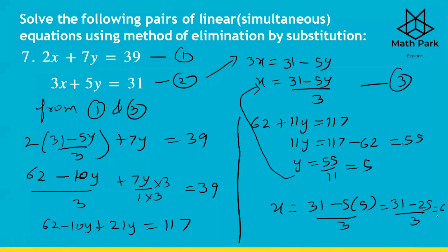So x = 2 and y = 5 is the required solution for our simultaneous equations. We have done 7 questions; the next 7 questions will be solved in the next video. If you like the video, please share with your friends. Thank you for watching — have a good day!